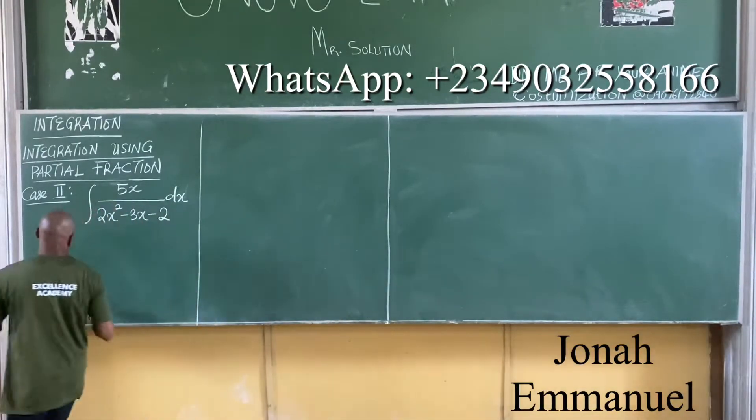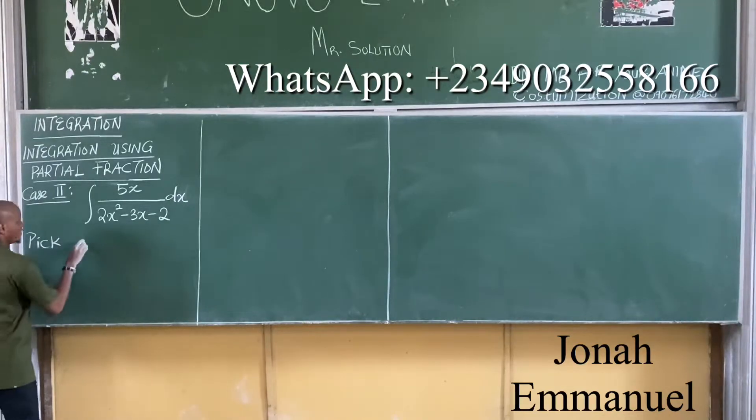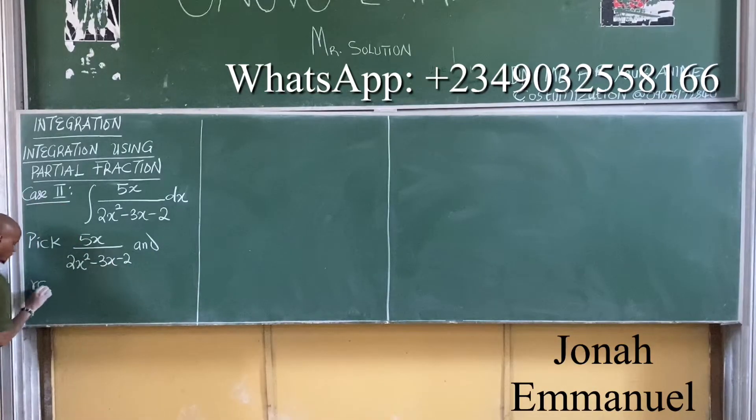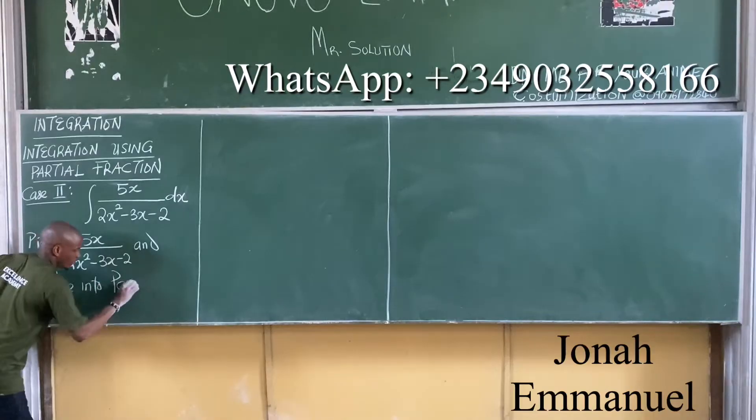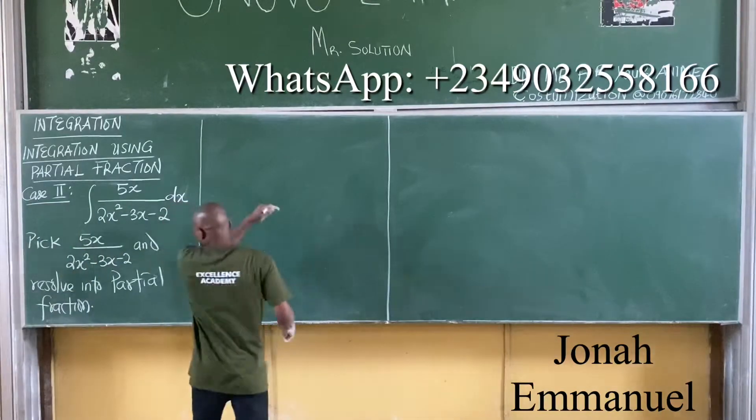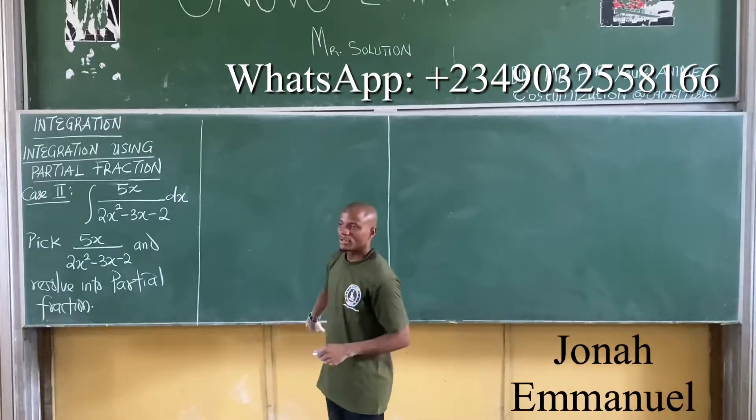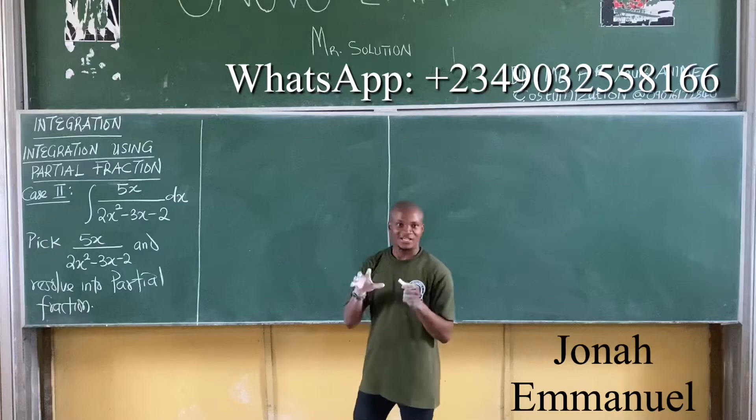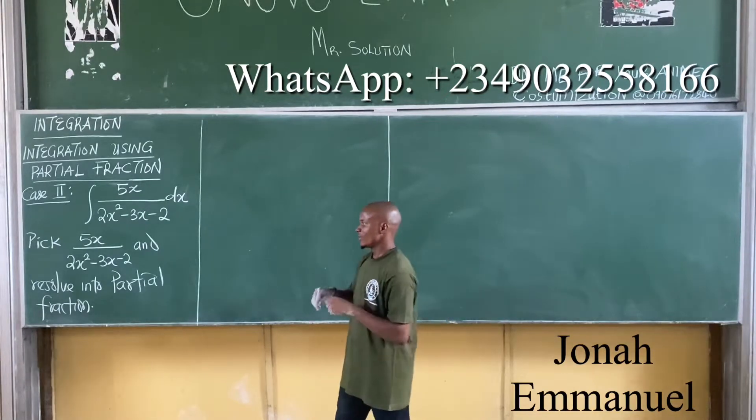So your first task here is pick 5x over 2x squared minus 3x minus 2 and dissolve into partial fraction. I will leave a link to partial fraction in the description of this video. So let's get some of it done.